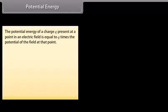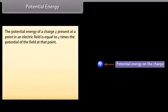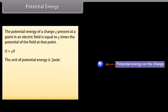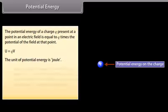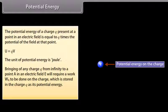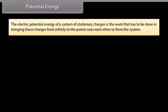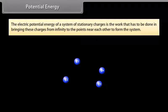The potential energy of a charge Q present at a point in an electric field is equal to Q times the potential at that point: U = QV. The unit of potential energy is joule. Bringing a charge Q from infinity to point A in electric field E requires work W_A done on the charge, which is stored as its potential energy: U_A = QV_A. The electric potential energy of a system of stationary charges is the work done in bringing these charges from infinity to form the system.